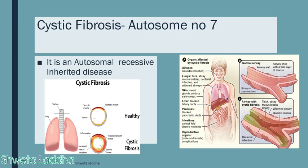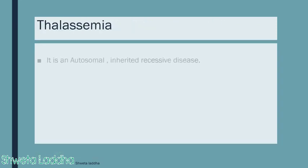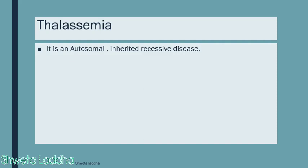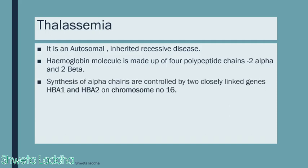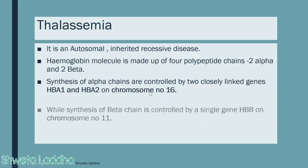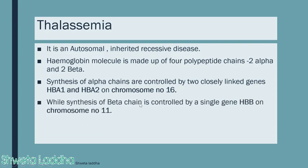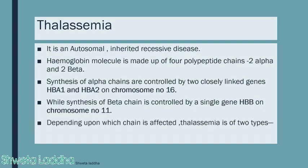Thalassemia is another autosomal inherited recessive disease. To understand it, recall that hemoglobin is made up of four polypeptide chains: two alpha chains and two beta chains. Synthesis of alpha chains is controlled by two closely linked genes, HbA1 and HbA2, located on chromosome number 16. Synthesis of the beta chain is controlled by a single gene, HBB, located on chromosome number 11.